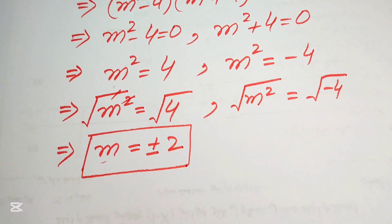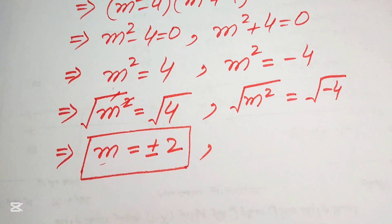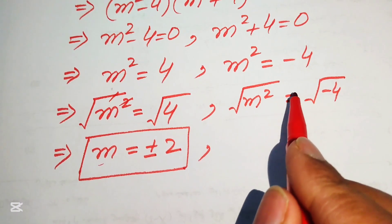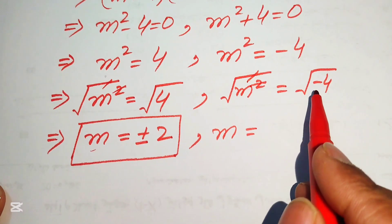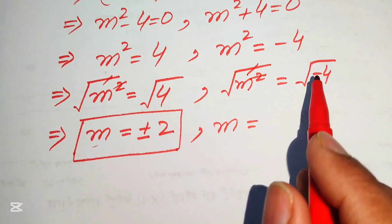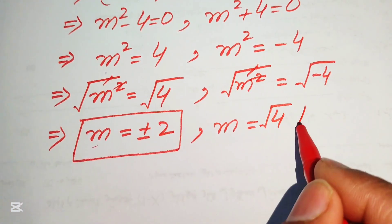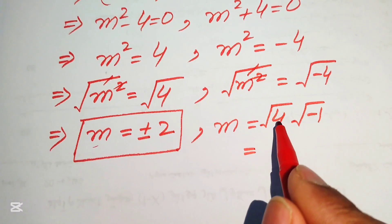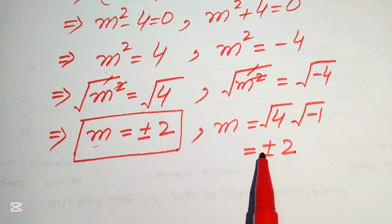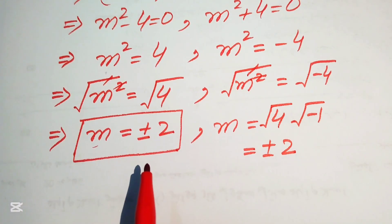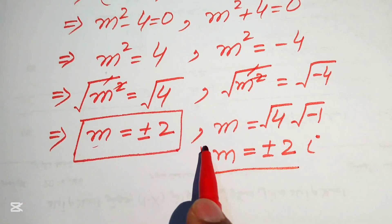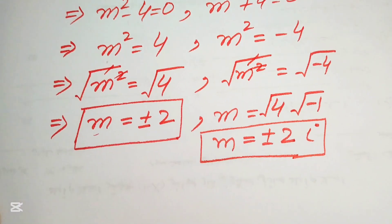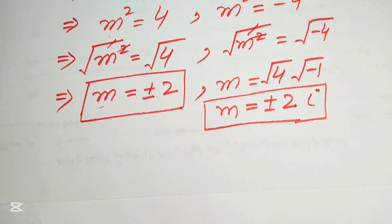For the second case, taking the square root of m² = -4, we write √(-4) = √4 × √(-1) = ±2i, since √(-1) = i (iota). These are the two complex roots of the equation. So the four roots are m = +2, -2, +2i, -2i.